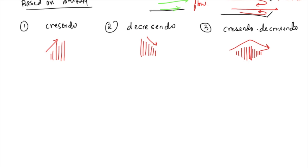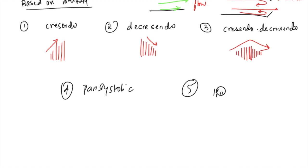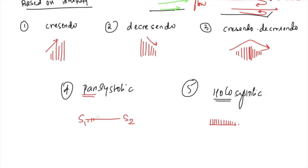Another important term is holosystolic or pansystolic. Holosystolic means the intensity remains the same throughout systole - it is present throughout the entire interval between S1 and S2. Pansystolic conveys the same idea - it tells you the span of the murmur, how long you will hear it.